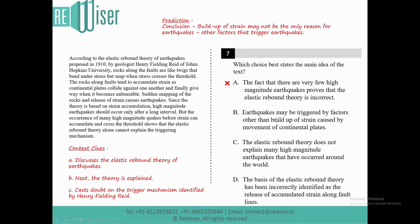Option B states that earthquakes may be triggered by factors other than strain caused by movement of continental plates. This is close to our prediction because there could be other factors that trigger the earthquake. So Option B sounds correct and is close to what we identified. Let's keep that and check the remaining options.